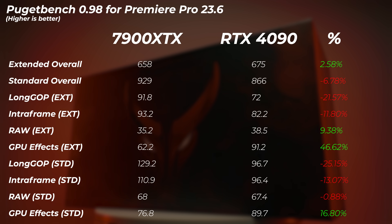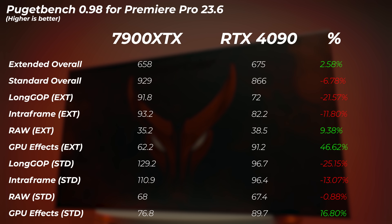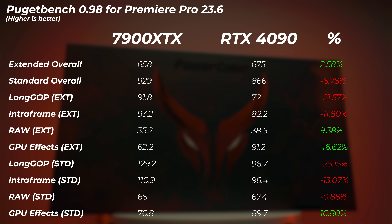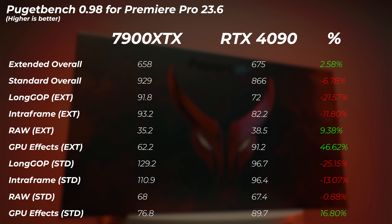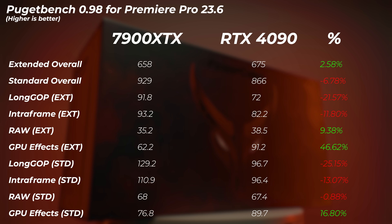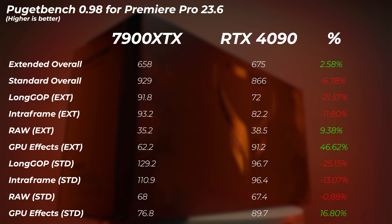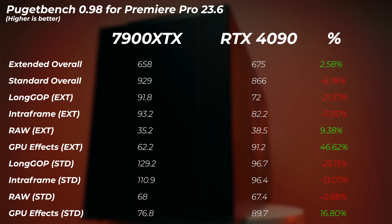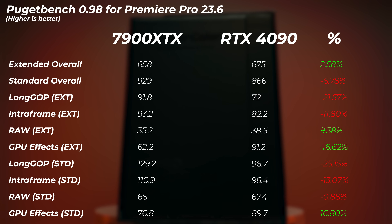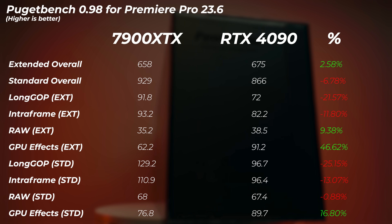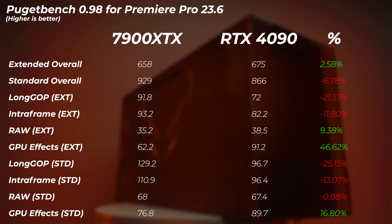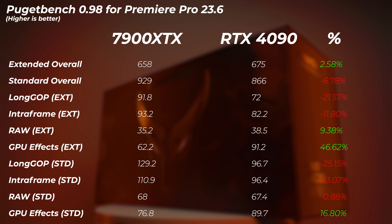In the video editing benchmark, the 4090 is about 2.6% faster in the extended overall score, but in the standard overall score the AMD card is beating the 4090 by 6.8% — yes, the 4090 is 6.8% slower. Long GOP extended is 21% slower on Nvidia, intraframe extended is 11.8% slower, long GOP standard is 25% slower, and intraframe standard is about 13% slower on Nvidia. GPU effects are considerably faster on Nvidia, especially on the extended score.